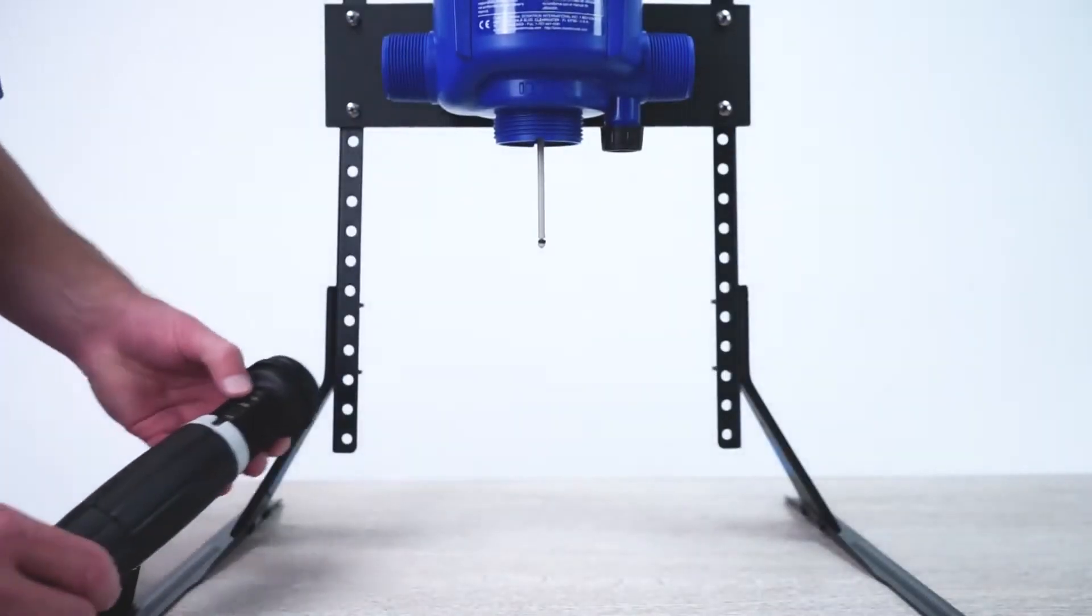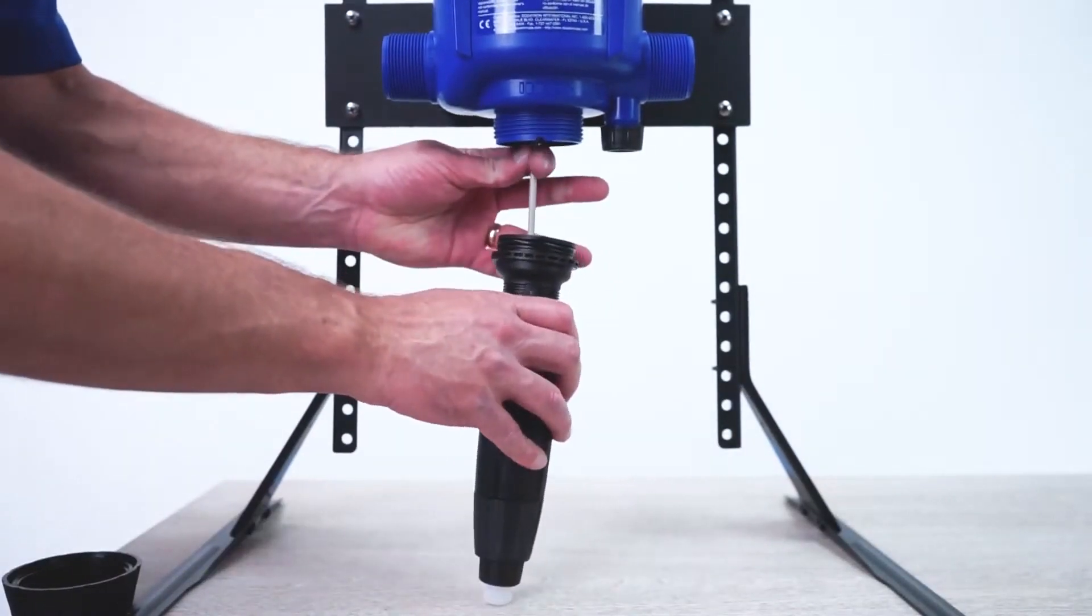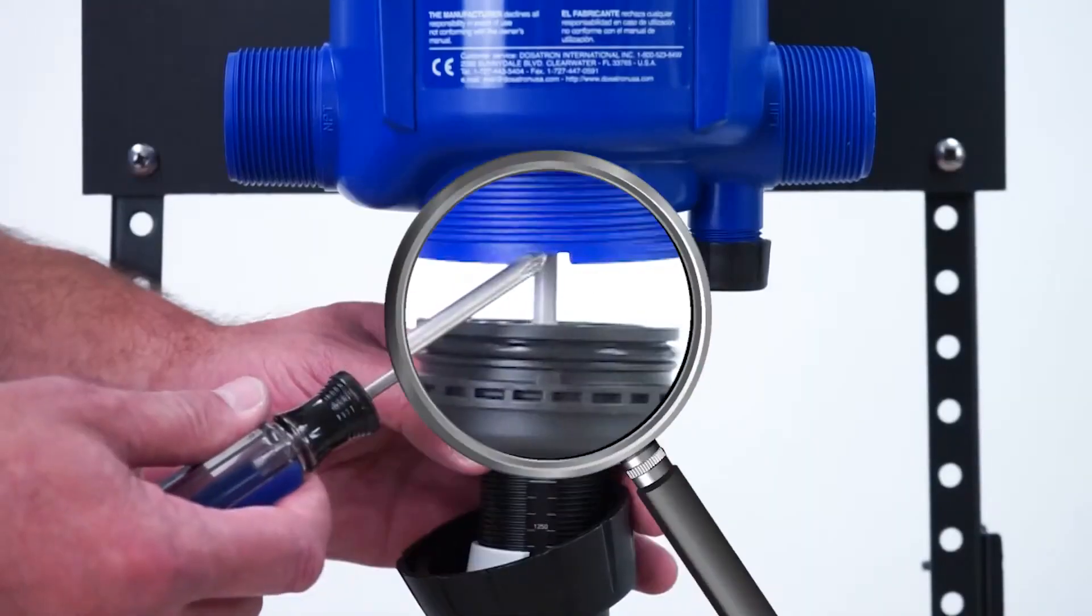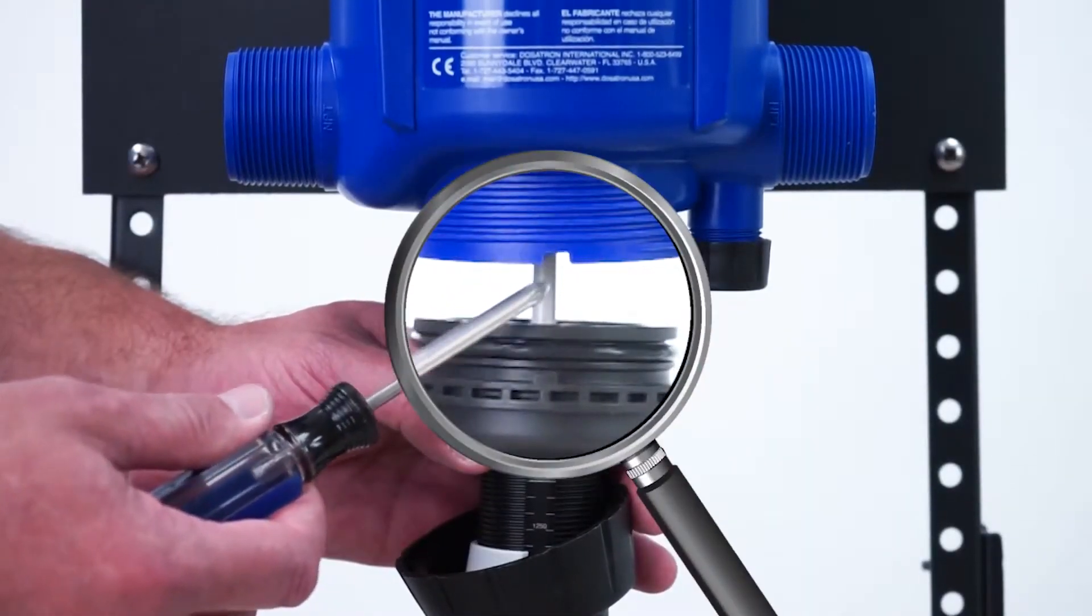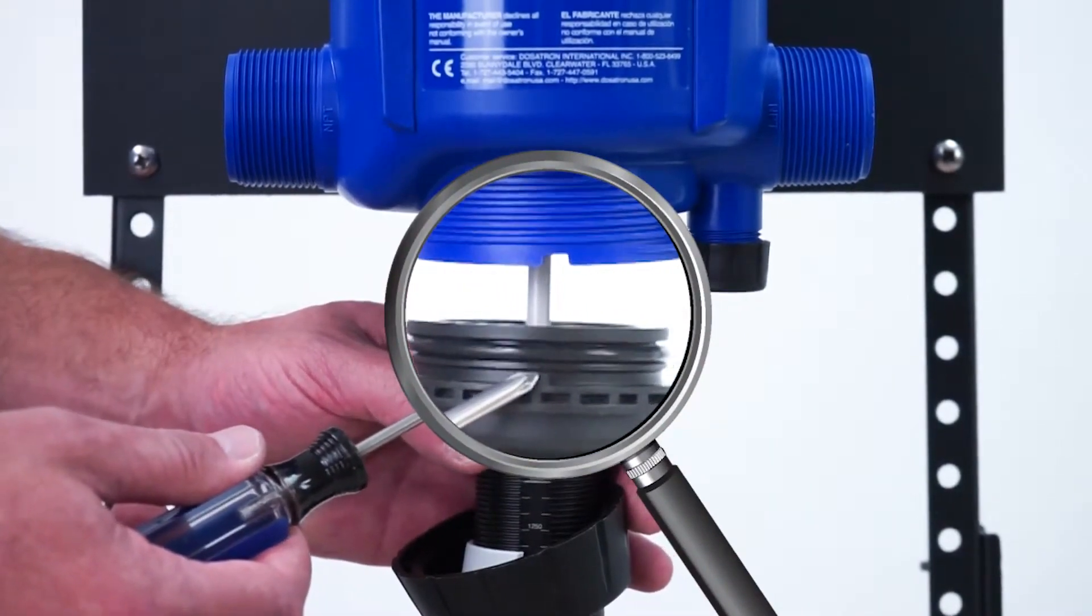Grab the injection stem assembly and carefully slide it onto the plunger like this. Align the notches on the lower part of the blue body with the teeth on the top of the injection stem assembly.